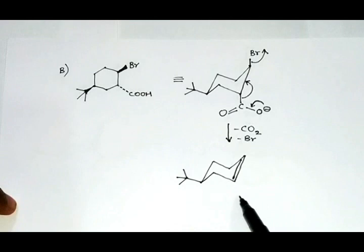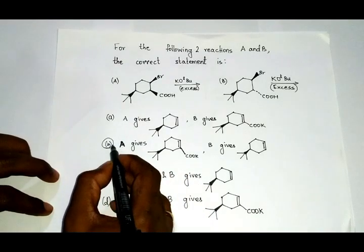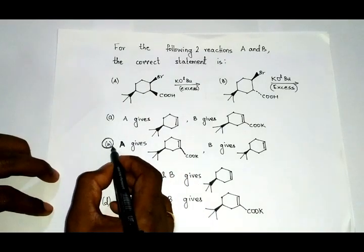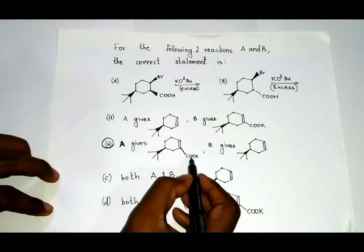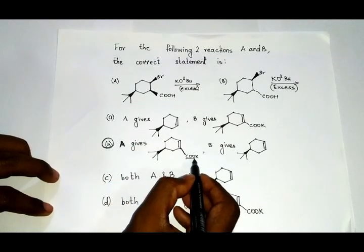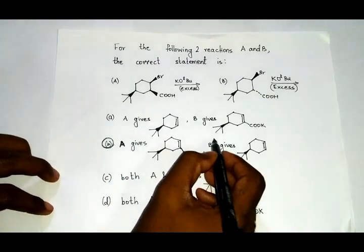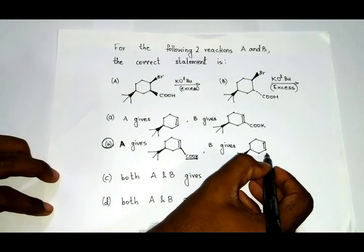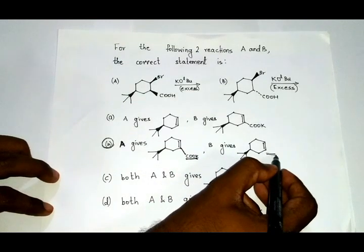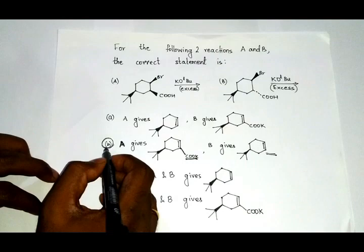This leads to the formation of this product. As you have noticed, carbon dioxide is lost, so the carboxylic group is no longer present. Therefore option B is the right choice, because in reaction A the carboxylic group remains, but in reaction B the carboxylic group has vanished.